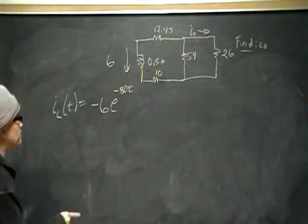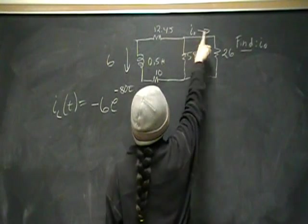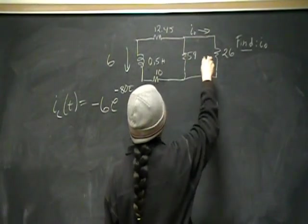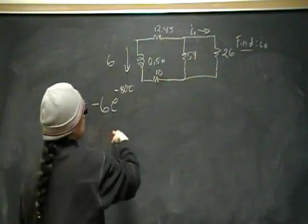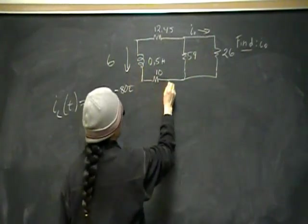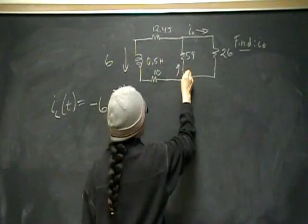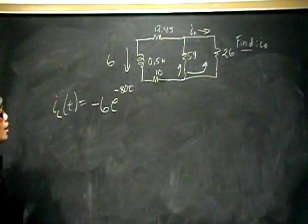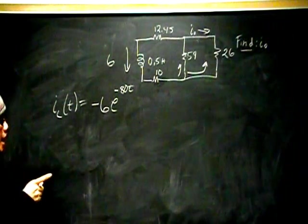Negative 6e to the negative 80t. That describes that current. But what describes this one? Well, we're going to use current division again, and the current, this current is going to split, right? We've got negative 6 going here, and it's going to split and go like that and go like that.